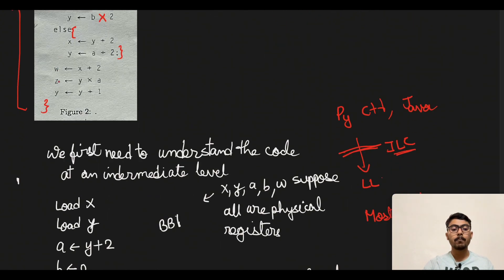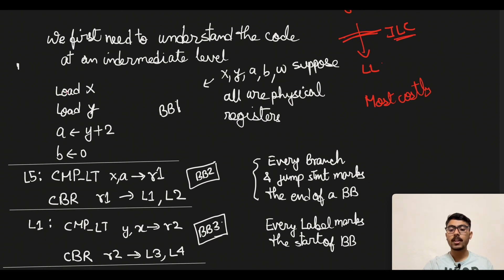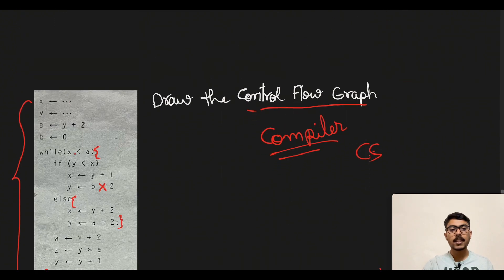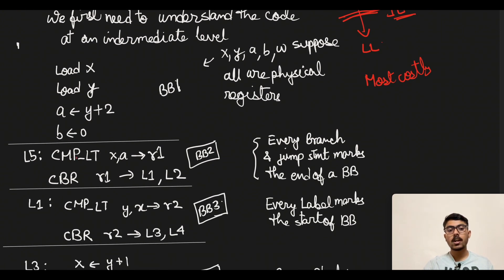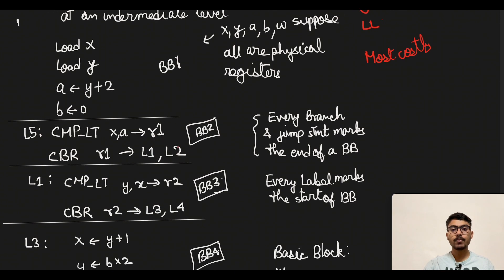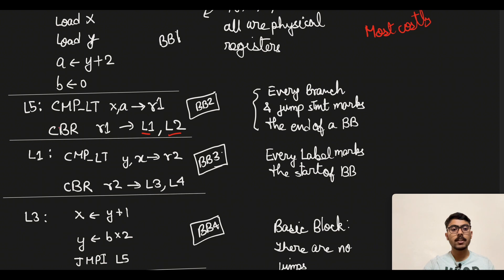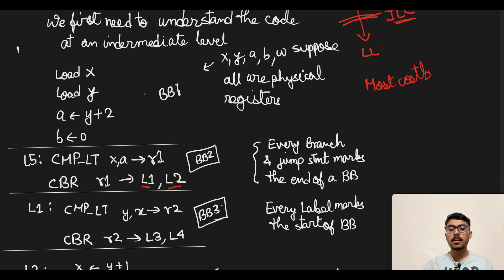The next part is the while loop. A while loop can only execute when its condition is met — here the condition is x less than a. For that we use CMP LT, which stands for compare less than. If x is less than a we store the result in register r1. Then we have a control branch statement: if r1 is set (i.e., r1 = 1) we go to label L1, otherwise if r1 is 0 we go to label L2. With this we have our first basic block.